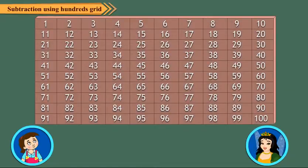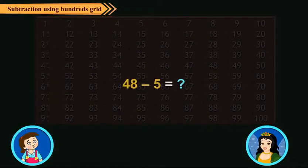To add ones, we move towards right on the hundreds grid. So to subtract ones on the number grid, we move towards the left. Let us find 48 minus 5.